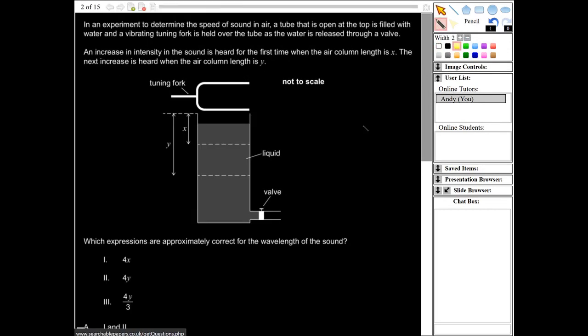This question here says, in an experiment to determine the speed of sound in air, a tube that is open at the top is filled with water and a vibrating tuning fork is held over the tube as the water is released through a valve. An increase in intensity of the sound is heard for the first time when the air column length is X. The next increase is heard when the air column length is Y.